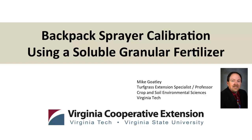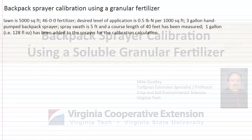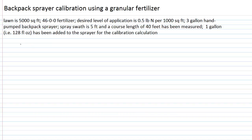Let's look at a backpack sprayer calibration using a granular fertilizer. We have a lawn that's 5,000 square feet. We're going to use 46-0-0, a urea-based fertilizer that's 46% nitrogen by weight. Our desired application level is half a pound of nitrogen per thousand square feet. We've got a three-gallon hand-pumped backpack sprayer, a spray swath of five feet wide, a course length of 40 feet, and one gallon — that's 128 fluid ounces — has been added to the sprayer for calibration.